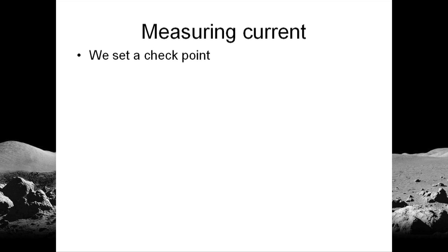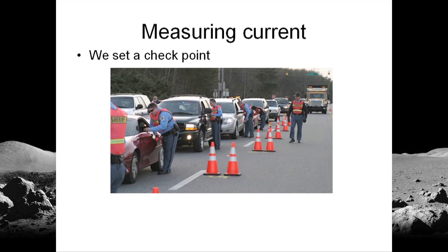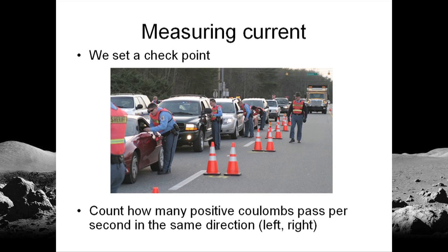Well, to measure current, what we do is we set a checkpoint, like a traffic checkpoint. However, instead of counting cars and passengers, we count positive coulombs that pass per second in the same direction, to the left or to the right, and we subtract the positive coulombs that cross the checkpoint in the other direction.